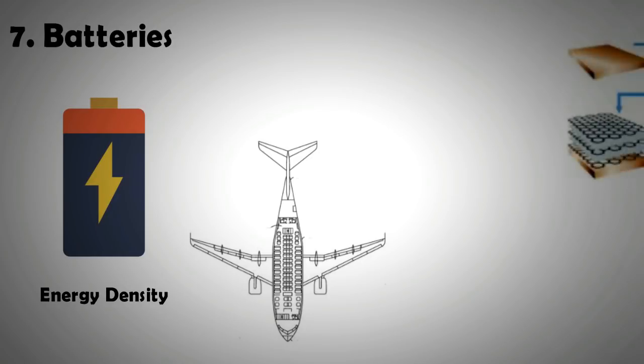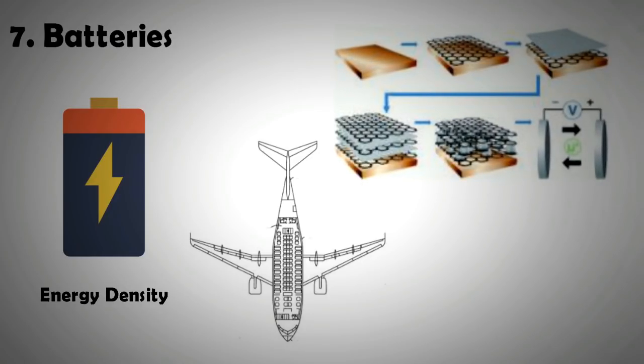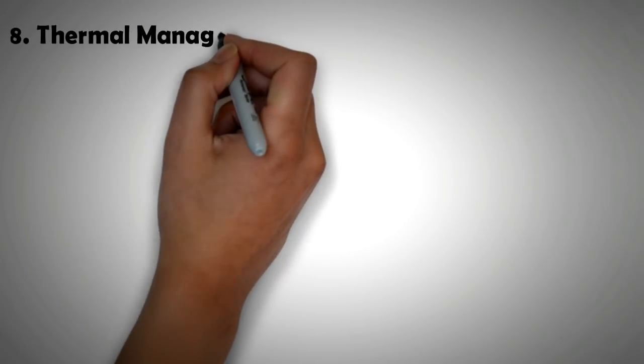As graphene is the most conductive material known to man, its use as a charge carrier will occupy less room compared to other materials. This will allow more space for charge storage in the battery. Thus, with the use of graphene, high-power batteries can also be high-energy batteries.